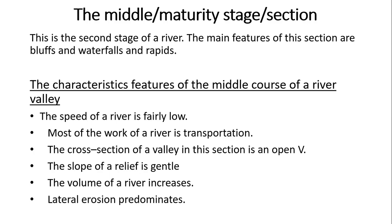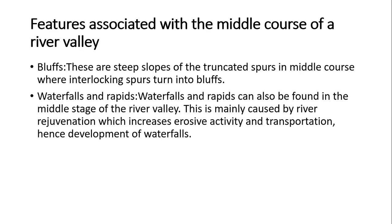The volume of the river increases — in this stage the volume becomes larger compared to the primary stage. There are other characteristics: lateral erosion predominates. Lateral erosion is the erosion that occurs at the sides of the course of the river.